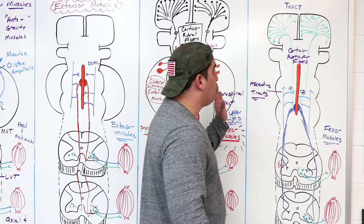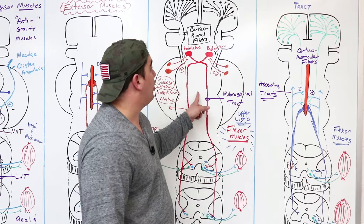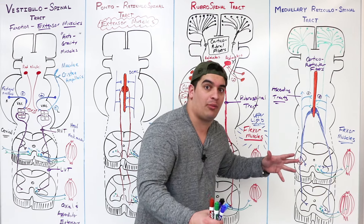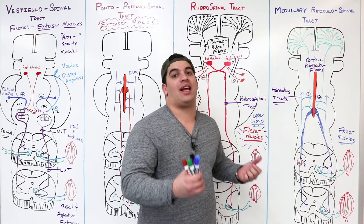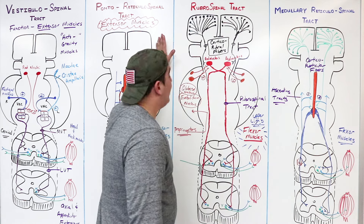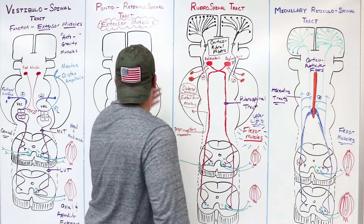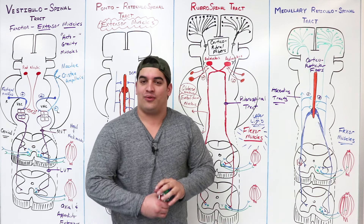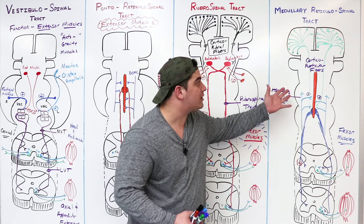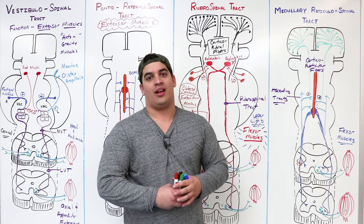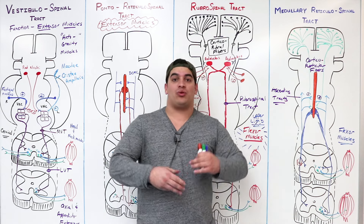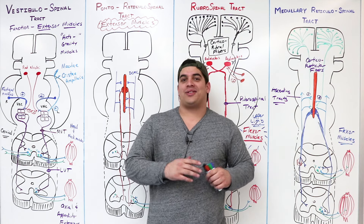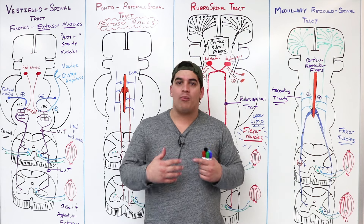I want you guys to group these two together: the rubrospinal tract and the medullary reticulospinal tract specifically control flexor muscles, whereas the pontoreticulospinal tract and the vestibulospinal tract control more of your extensor muscles. That covers all of the descending tracts — specifically the subcortical tracts. We're going to have a nice overview in the next video to discuss these one more time.